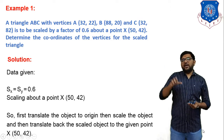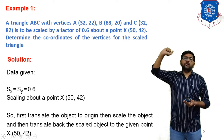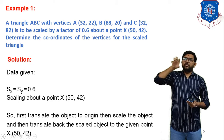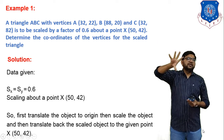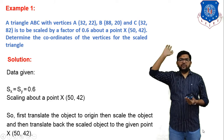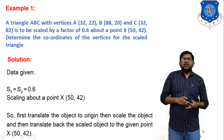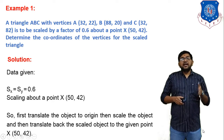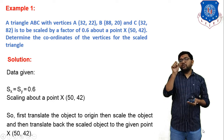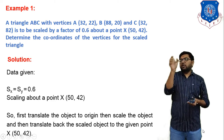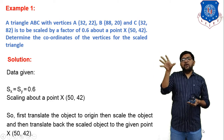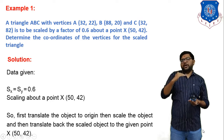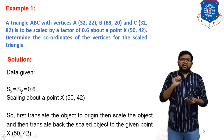As we discussed in the last session, if we have to scale any triangle about a particular point, we first have to shift that particular point to the origin. After shifting to the origin, we perform scaling on the object, and then we shift it back to its original position. Scaling about point X means we shift X to the origin — since the coordinate is (50, 42), we move minus 50 in the X axis and minus 42 in the Y axis to bring X to the origin.